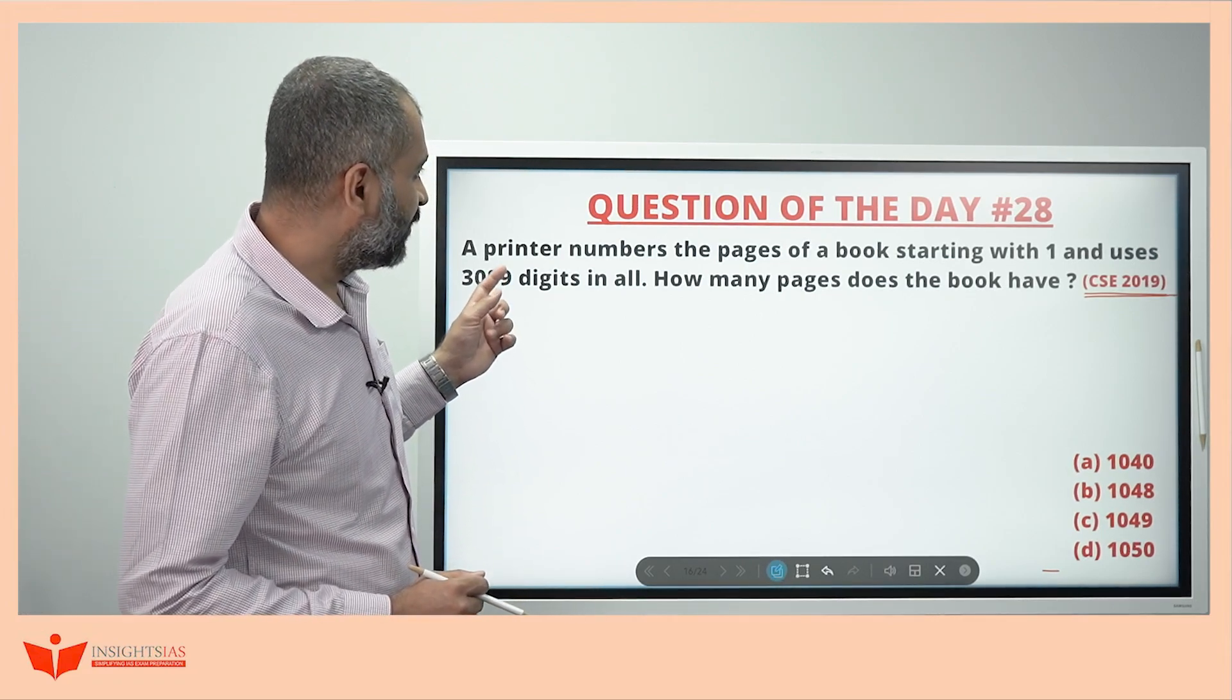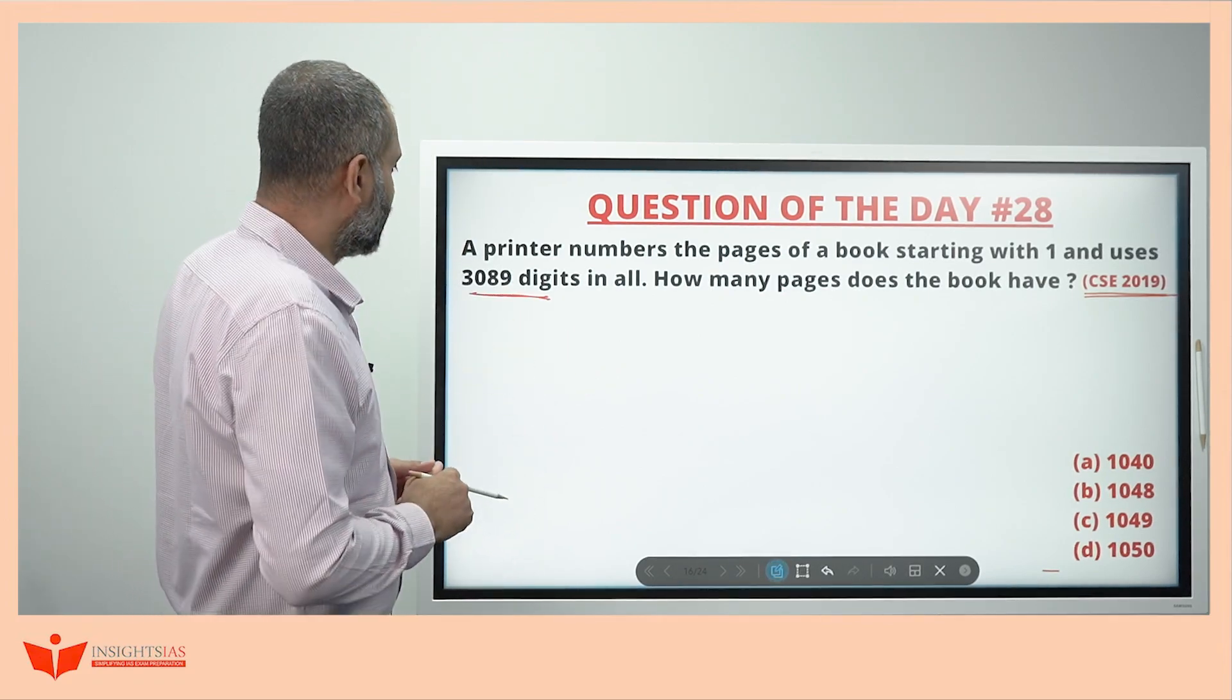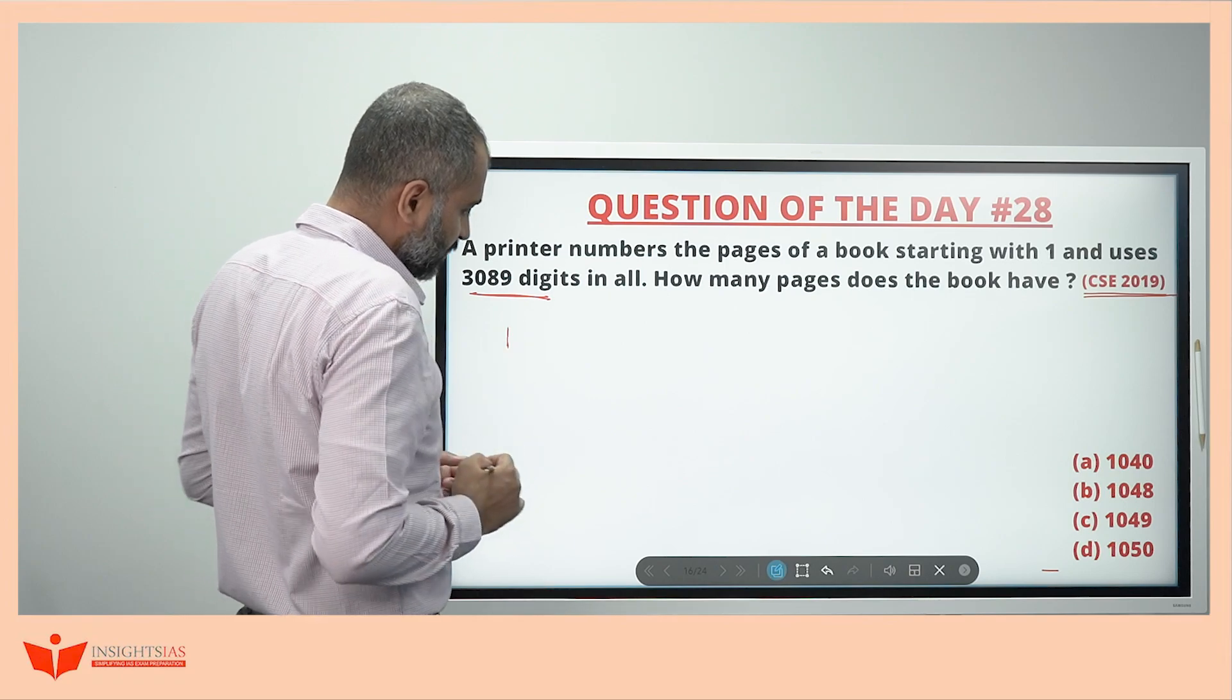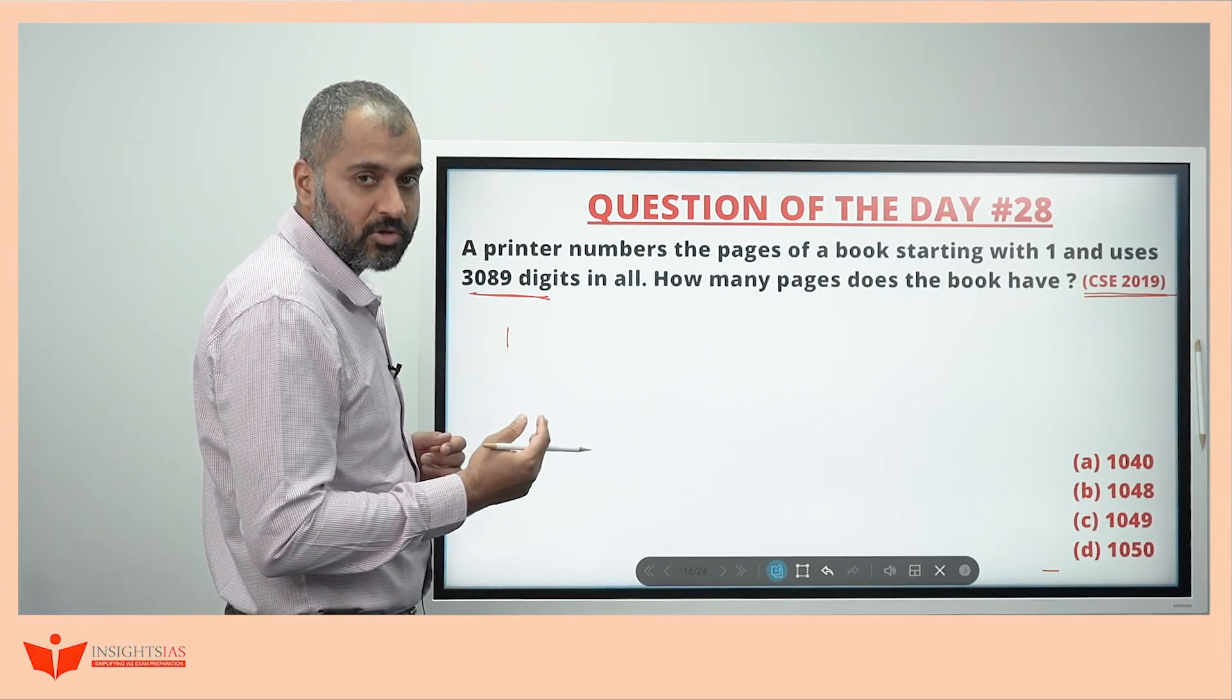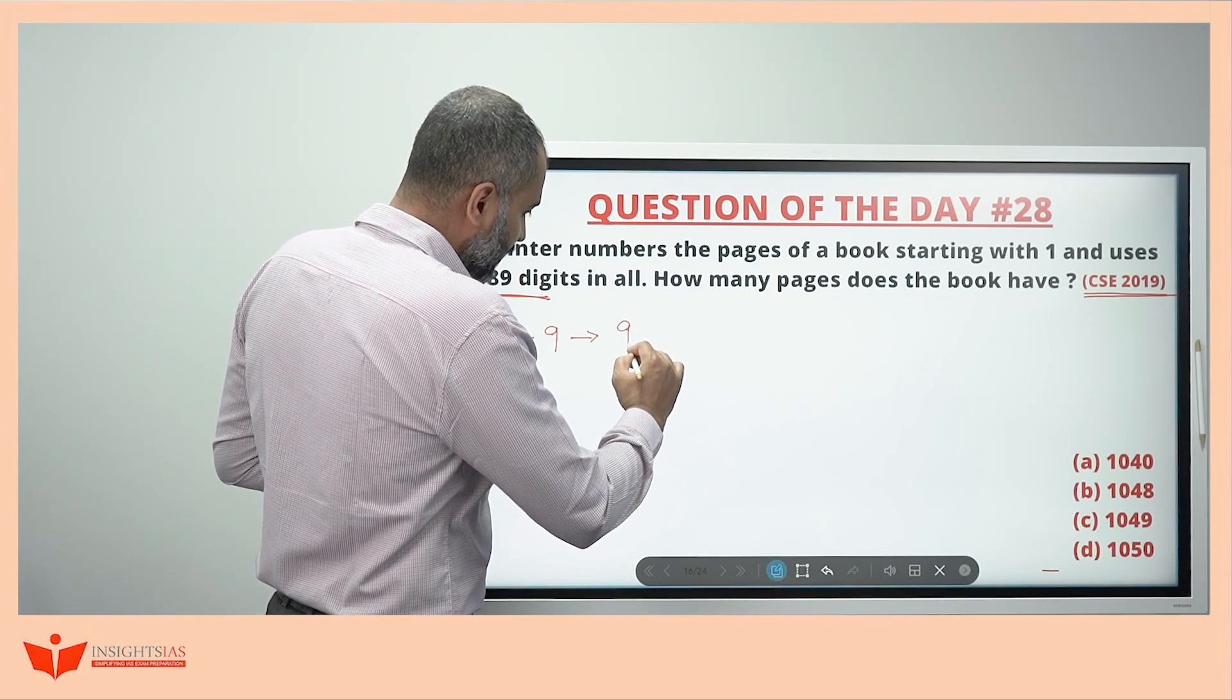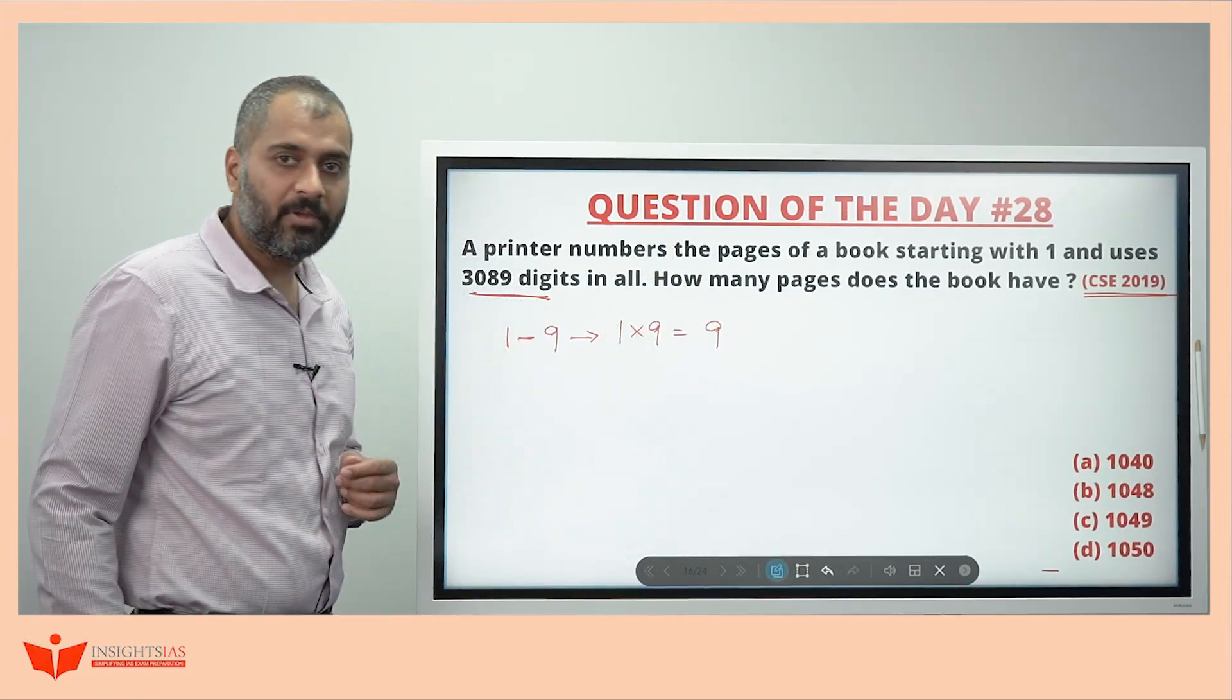The number of pages you have to calculate, the number of digits is given. Vice versa can also be given. The printer prints - see page number 1 will have one digit, page number 2 will have one digit, page number 3 also will have one digit. So 1 to 9th page will be having one digit. 9 will be there, so totally 9 digits will be printed.